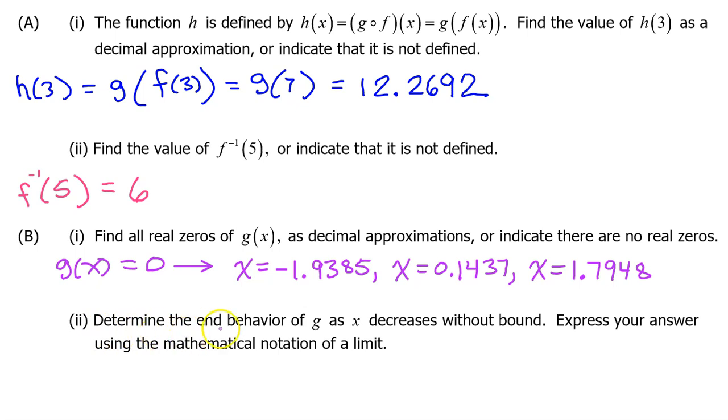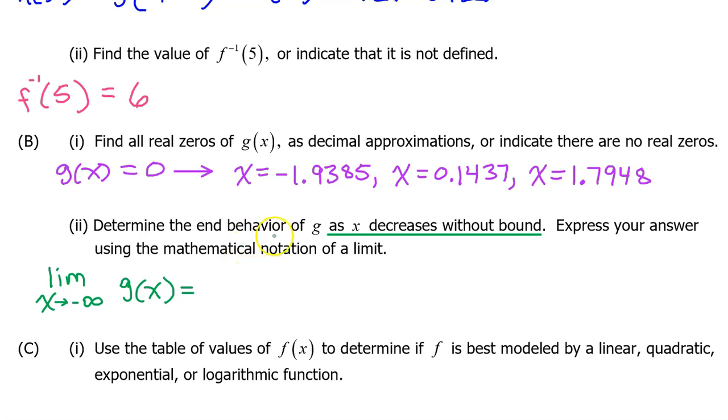Part B.2: Determine the end behavior of g as x decreases without bound. Express your answer using the mathematical notation of a limit. The end behavior of g as x decreases without bound means the limit as x approaches negative infinity of g of x. In other words, what happens to the value of g of x as we slide to the left forever?